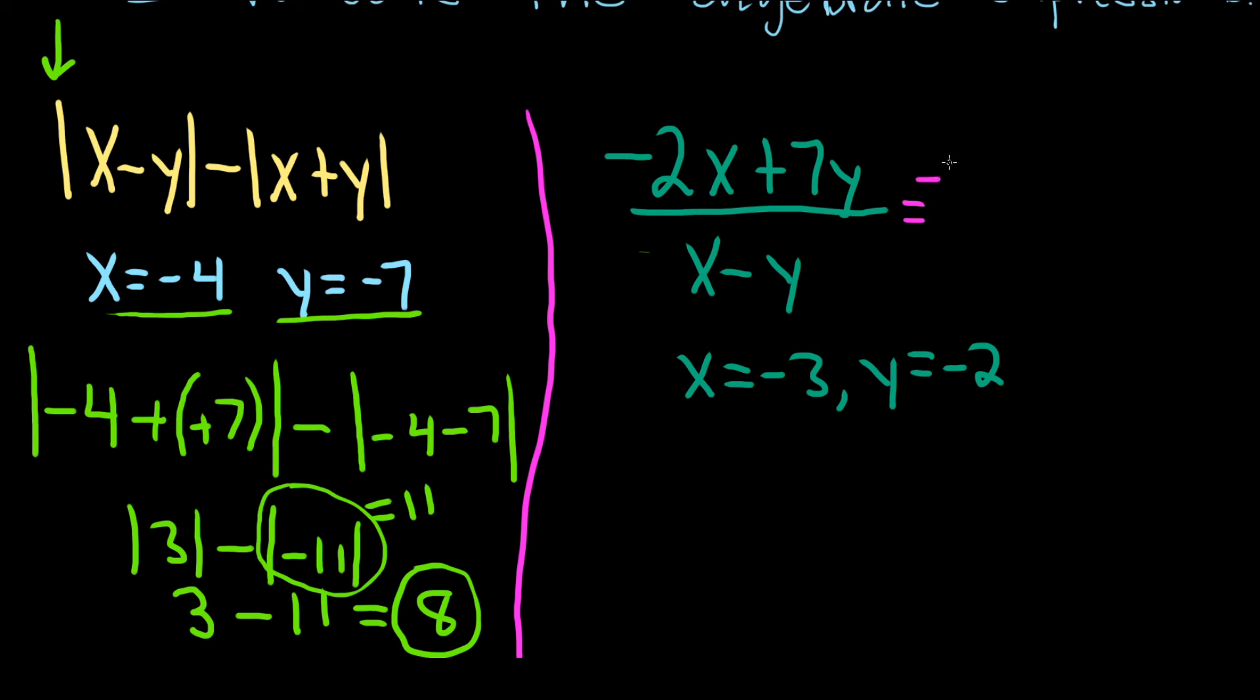So we have negative 2 times, and then x here is negative 3, plus, and then we have 7, and then y is negative 2. Good stuff. 5 over, and then x is negative 3.